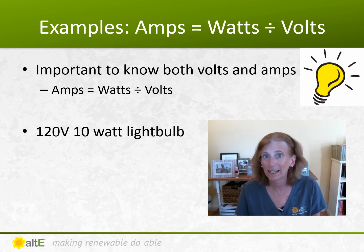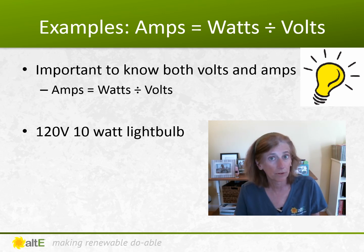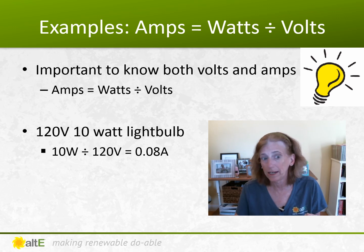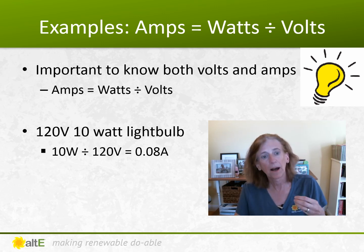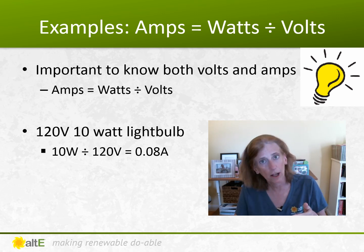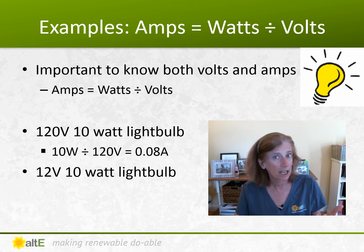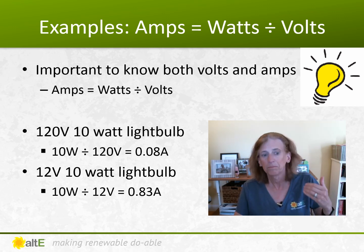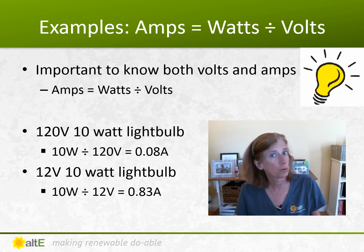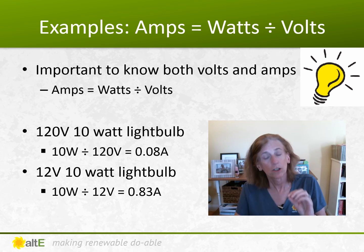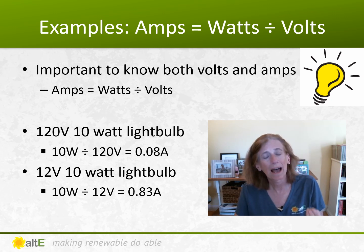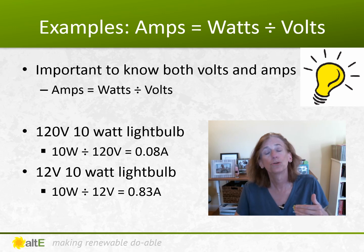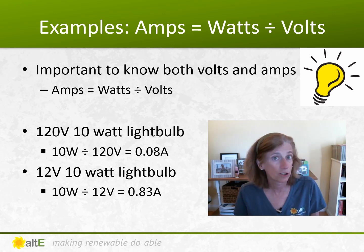Take that 10 watt light bulb at 120 volts: 10 watts divided by 120 volts equals 0.08 amps — very little current draw, lots of voltage pressure but not much flow. Now take a 10 watt light bulb on a 12 volt circuit: 10 watts divided by 12 volts equals 0.83 amps. The volts are one tenth, so the amps are 10 times higher — you'll have 10 times more current running through that wire on a 12 volt circuit versus a 120 volt circuit.